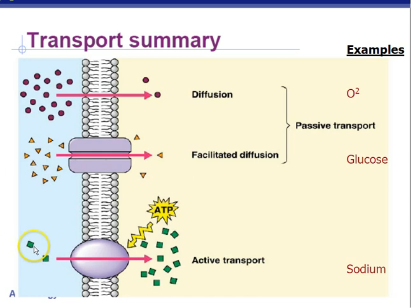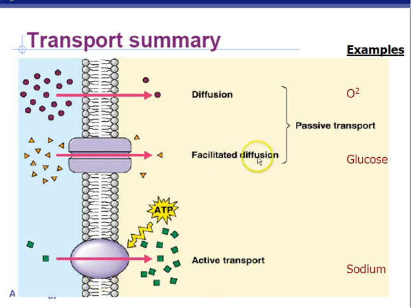Active transport is the opposite of diffusion and the only process that requires energy — ATP energy. The ATP opens a protein channel and pumps things like sodium, potassium, and other ions from low concentration to high concentration. Active transport requires energy in the form of ATP; diffusion moves from high to low concentration with no energy required, while active transport moves from low to high concentration and does require energy.